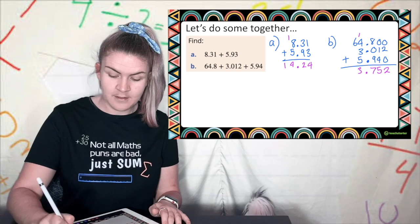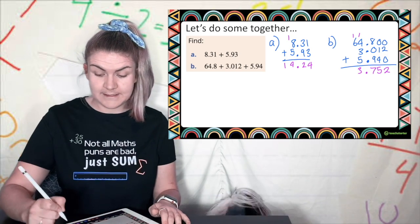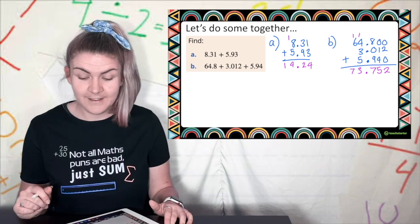Plus 3, 13. 3 carry the 1. 1 plus 6 is 7. 73. Let's check is it reasonable.